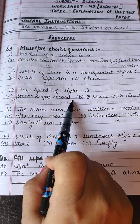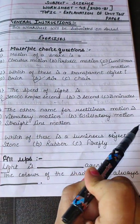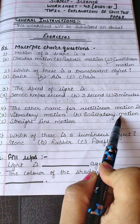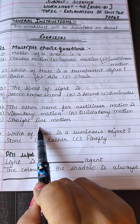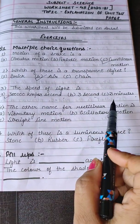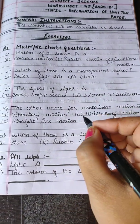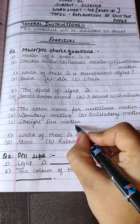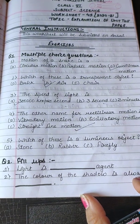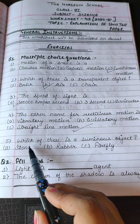The next question is: the other name for rectilinear motion is — vibratory motion, oscillatory motion, or straight line motion? The other name for rectilinear motion is straight line motion, so that is the answer.